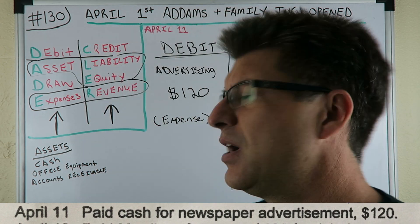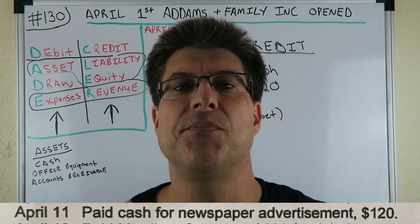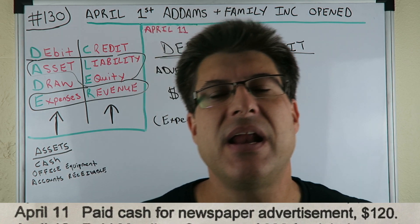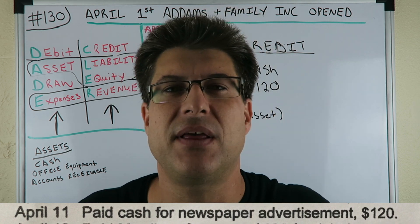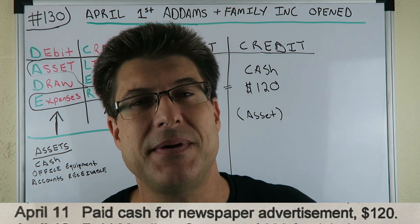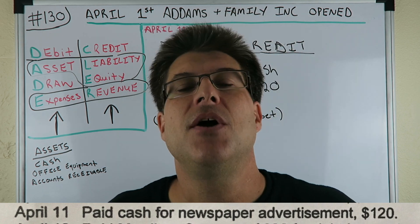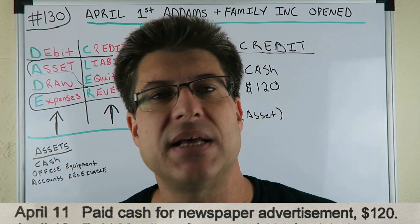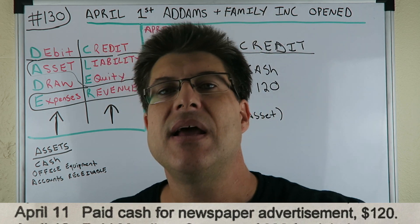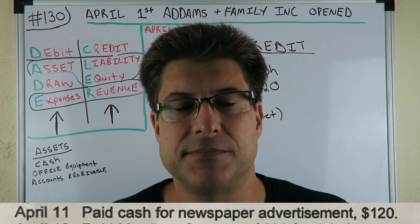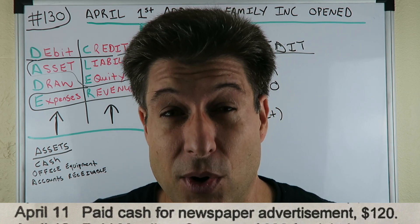I think this might be one of the first expenses we've done in this Adams Family series. You just have to keep on practicing. Things could overlap — an expense could maybe be an asset or something else — that's why I always say do cash first for journal entries, because cash is what it is: if it's increasing, it's a debit; if it's decreasing, it's a credit. Most journal entries do have cash in them. Anyways, this is CPA Strength — I'm out until tomorrow. Deuces.